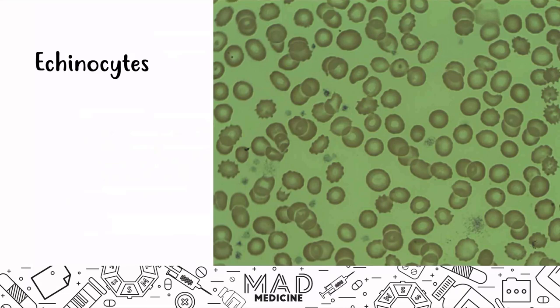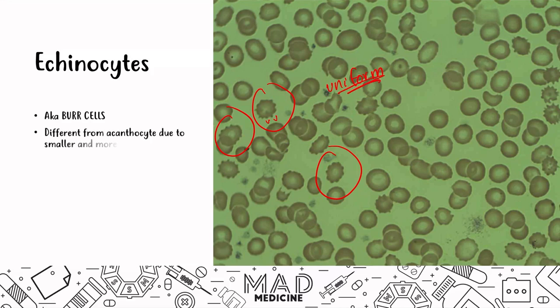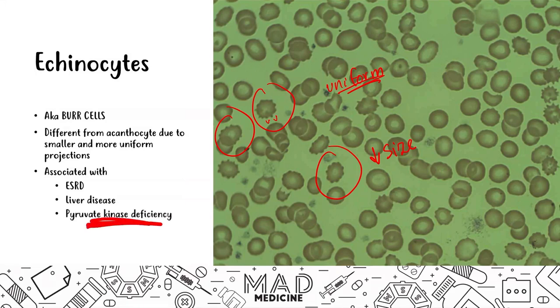Echinocytes, also known as burr cells, are found on your peripheral blood smear. They look very similar to acanthocytes, which are spur cells that look like spurs on a cowboy boot. The key difference is that echinocyte projections are more uniform, and echinocytes are also smaller in size than acanthocytes. Echinocytes are associated with end-stage renal disease and liver disease, but the most high-yield association for Step 1 is pyruvate kinase deficiency.